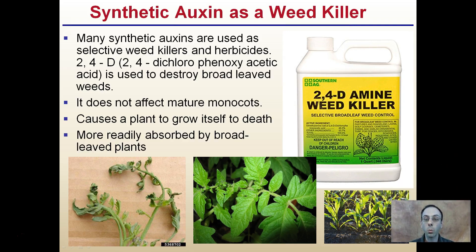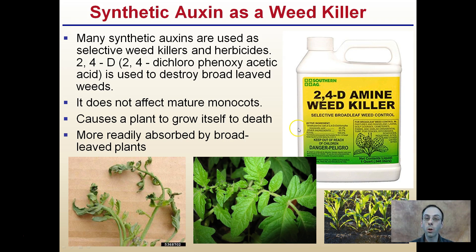Lastly, synthetic auxins are actually used as weed killers. While natural auxin as a plant hormone helps plants develop, synthetic auxins can eliminate plants. 2,4-D is a synthetic auxin used to destroy broadleaf weeds. It does not affect mature monocots. It causes plants to grow so fast they can't support themselves and essentially die. It's more readily absorbed by broadleaf plants, which is why some weed killers are advertised as killing weeds but not the grass — because they contain 2,4-D, a selective broadleaf herbicide targeting mainly dicots.